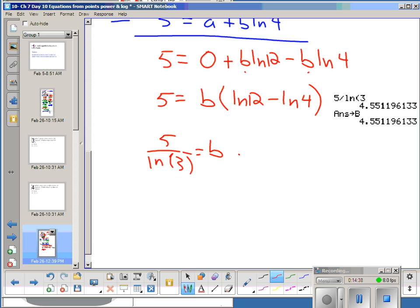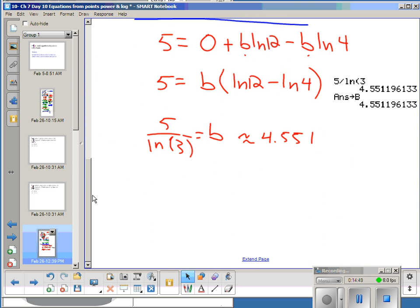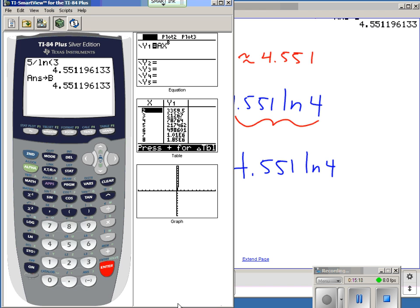So now I have my B. I need to find my A. And again, I'm going to go back to one of my original equations. And again, it doesn't matter which one. So if I do 5 equals A plus B LN of 4. So I could put it back in here. 5 equals A plus B LN of 4. And now I'm going to solve for A. So again, this part right here is a number. It represents a number. And so A is 5 minus 4.551 LN of 4. And I can do that on my calculator. 5 minus my, whatever I got for B, that's my 4.551 LN of 4. And there's my A. I'm going to store that in alpha A.